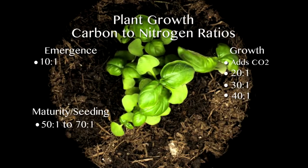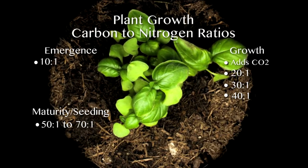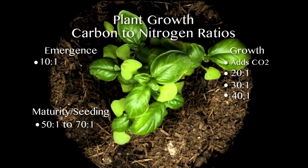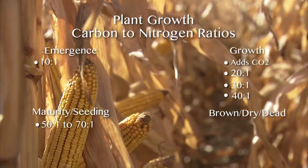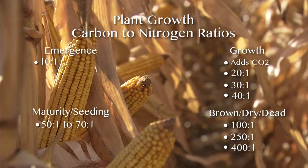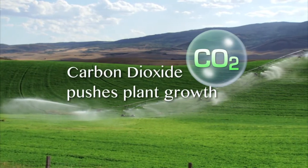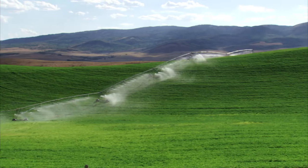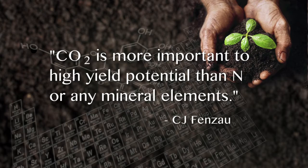This means that we are accumulating carbon dioxide at 10, 20, 30, 50, even 100 or more times the rate that we're accumulating nitrogen. When we look at dead senescent plant growth, it has a carbon to nitrogen ratio of 100, 250, 400 and more carbons to 1 nitrogen. So it really is the carbon dioxide production that pushes plant growth. Yes, nitrogen, phosphorus, and potassium are all necessary, but they are not the driving forces behind plant production and plant biomass. Carbon dioxide is more important to high yield potential than nitrogen or any mineral element.